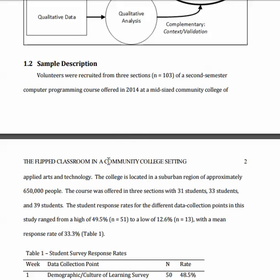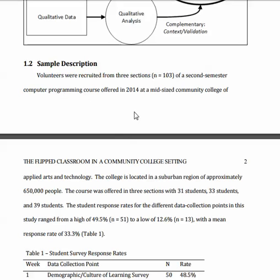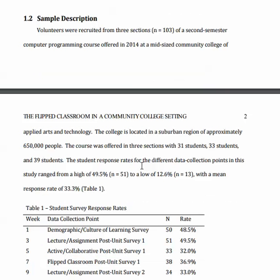Here's a second example. The student used the heading 'sample description,' though it's more typical to use 'participants' now — samples are more common in scientific papers, whereas education papers generally use the word participants. This student wrote that volunteers were recruited across three sections, giving the total N. It mentions a computer programming course, giving context and the year. It then talks about the college, the size of the college, the number of courses, and the number of students in each section.